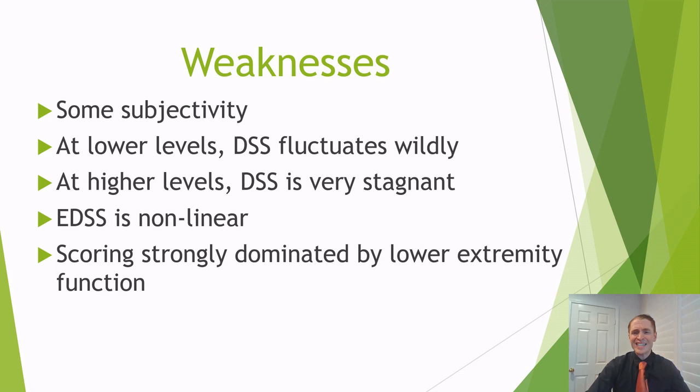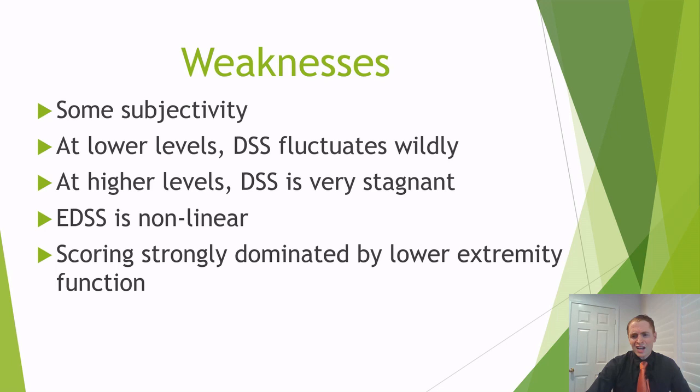At higher levels, EDSS is extremely stagnant and doesn't move around a lot. For instance, if you have imbalance and use a cane to walk, your EDSS is 6.0. If you have progressive MS and worsen over the years — walking only 800 meters, then 400, then 200 — this may be very functionally significant, but your EDSS is still 6.0. Also, the EDSS is very nonlinear. The difference between an EDSS of 1 and 2 can be very small, but the difference between 6 and 6.5 is often enormous.